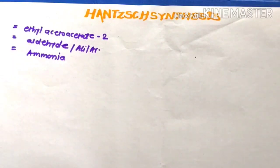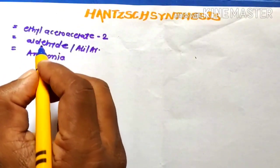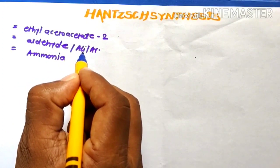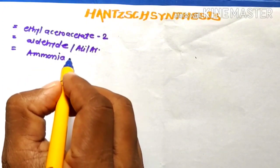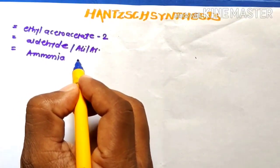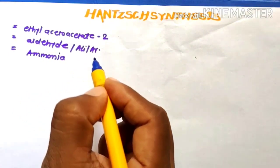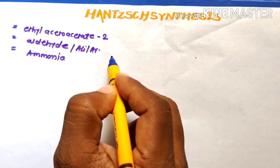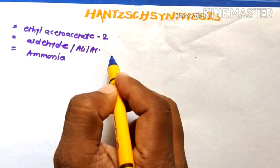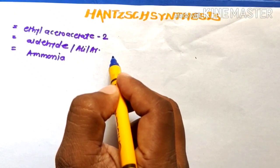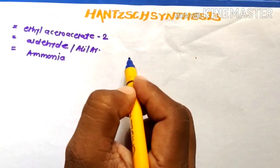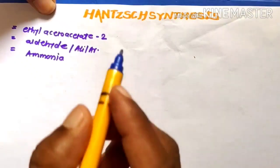The reaction involves 2 mol of beta-dicarbonyl compound (ethyl acetoacetate), 1 mol of aliphatic or aromatic aldehyde, and 1 mol of ammonia. These react in the vessel to form a dihydropyridine derivative. On oxidation with nitric acid, it gives the pyridine derivative.